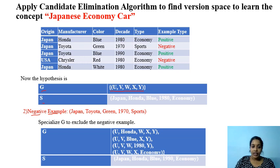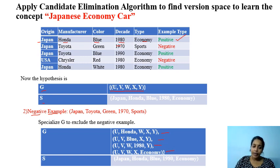What are the possible values of U (origin)? Japan and USA. If we specialize U with USA, then that hypothesis fails to accept the first positive example, so we keep U as a variable. V is specialized with Honda, because Honda accepts instance 1. We can specialize W as Blue, X as 1980, and Y as Economy. So we got these 4 specializations of the general concept G, using the general-to-specific method.